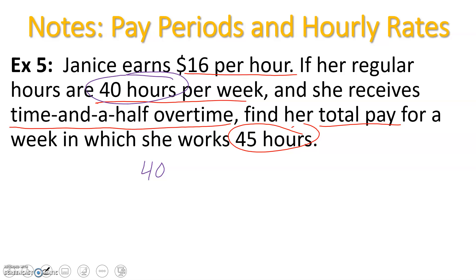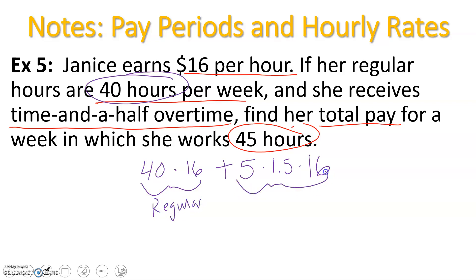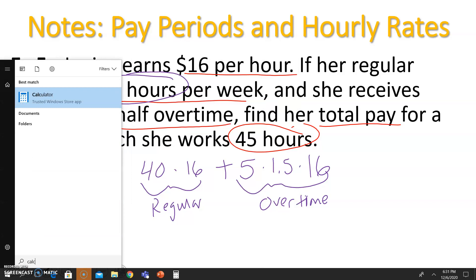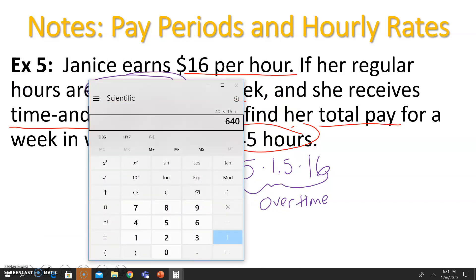For the first 40 hours she earns $16 per hour: 40 times 16. For the extra five hours of overtime, she earns one and a half times her $16 rate. So her total is 40 × $16 plus 5 × 1.5 × $16, which equals $760.